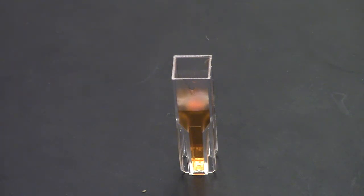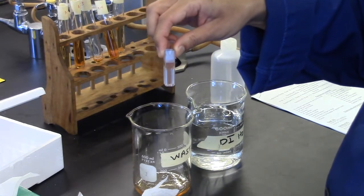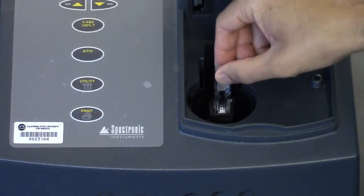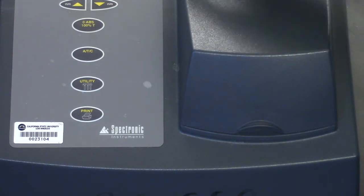When inserting the cuvette into the spectrometer, the arrow at the top of the cuvette should be pointing towards you. Make sure the distilled water blank is wiped dry and insert it into the spectrometer. Close the cover gently.